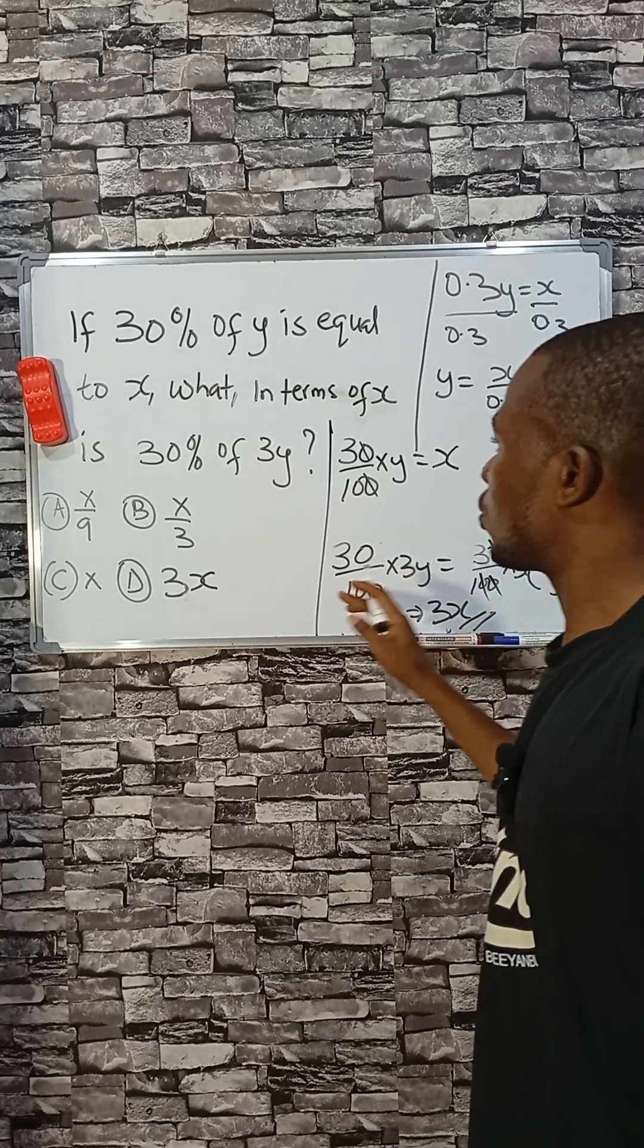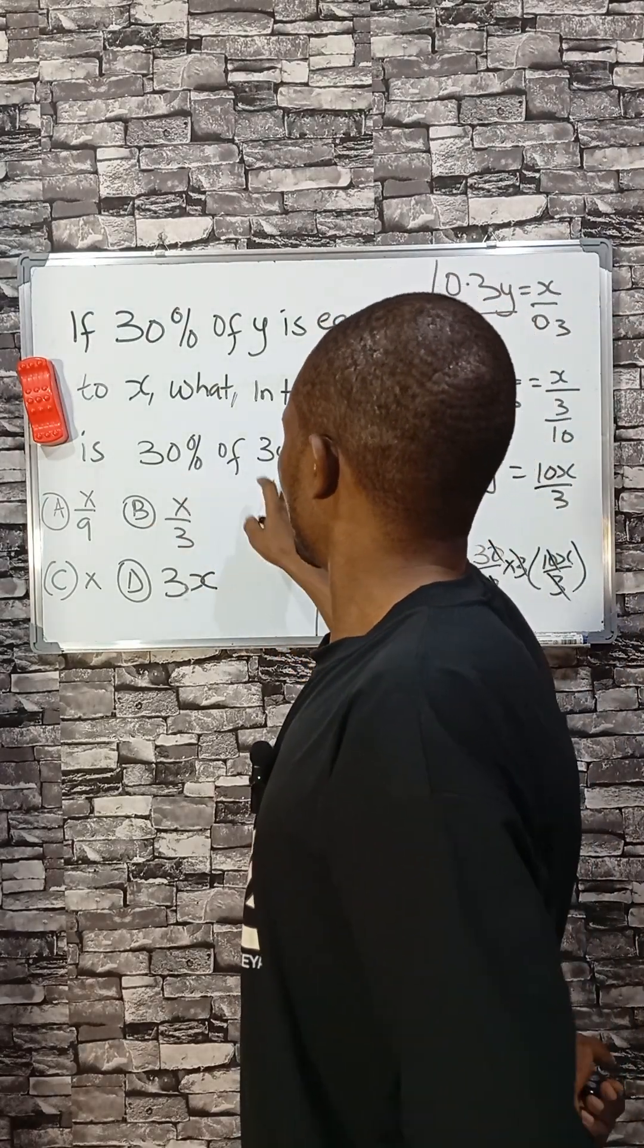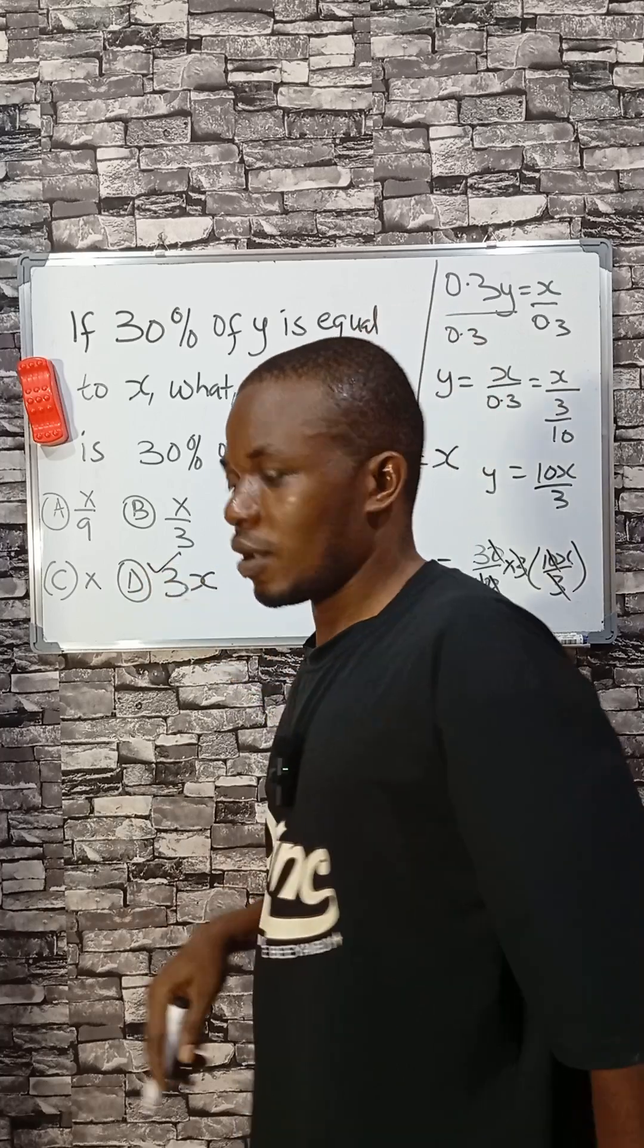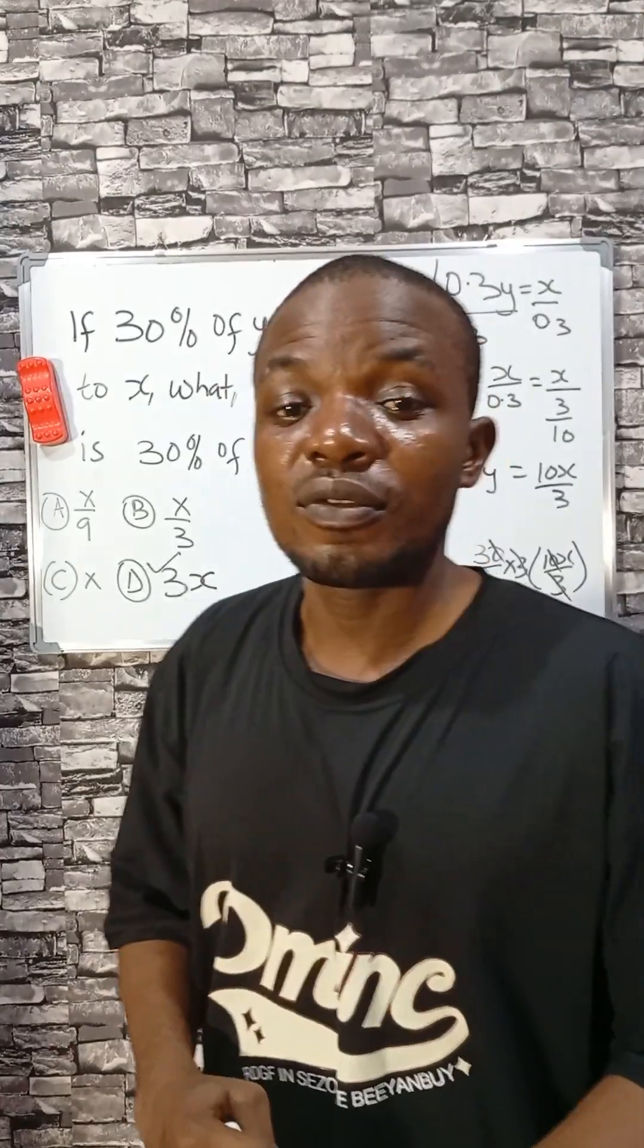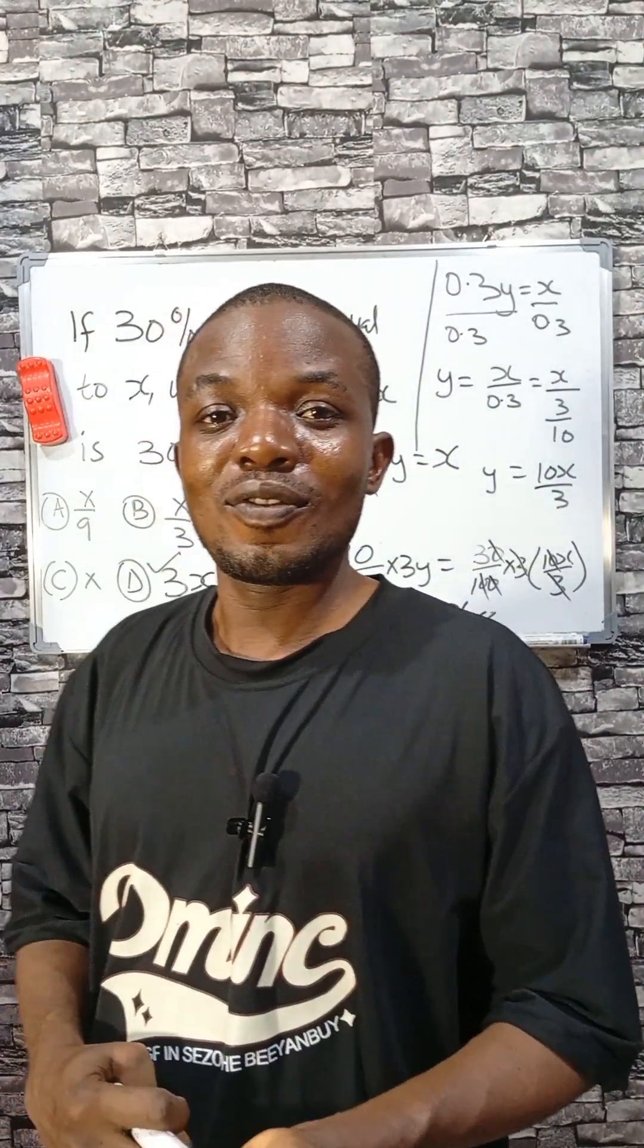So in terms of x, the 30% of 3y is just 3x. Very simple. You can subscribe to this channel for more of this. Bye.